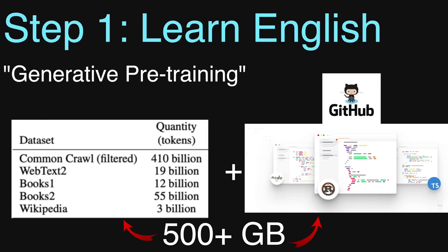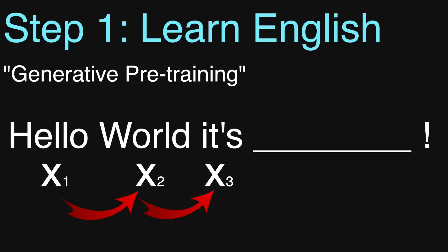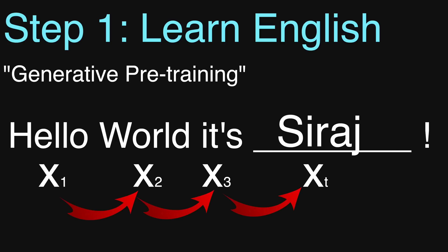In the first step, OpenAI collected a dataset of 500 gigabytes of text data, including web pages, books, articles, wikis, academic papers, and even code. The goal was to find a way to model text as a sequence of words in the English language.